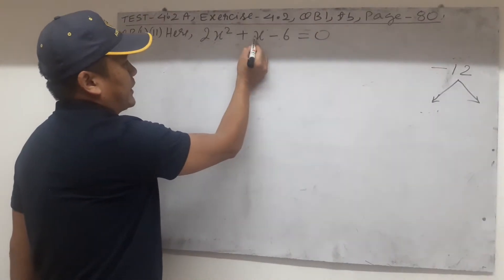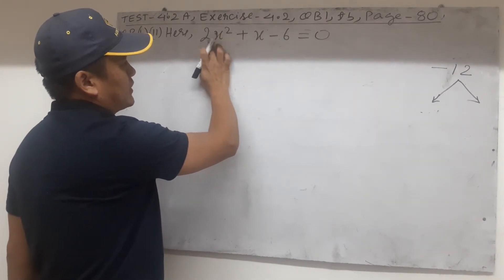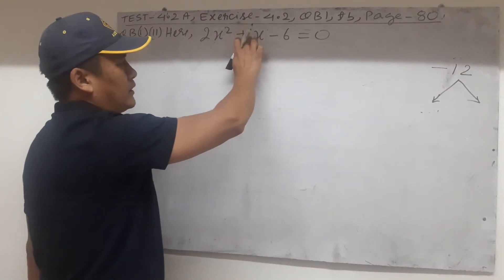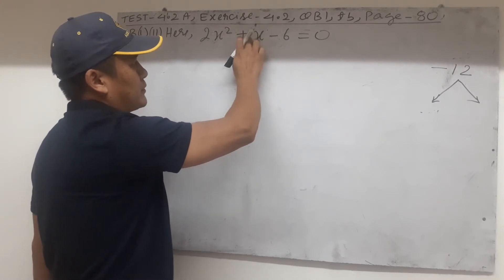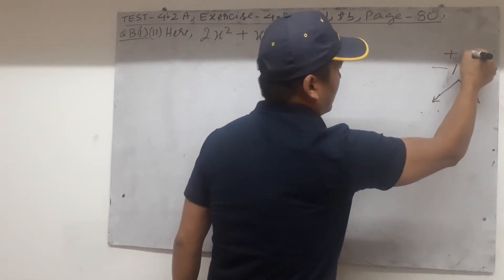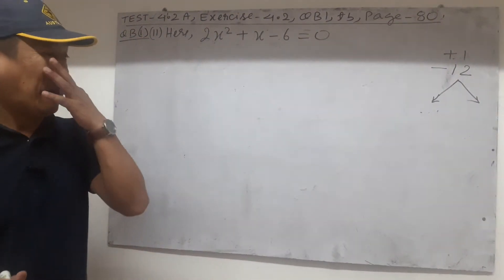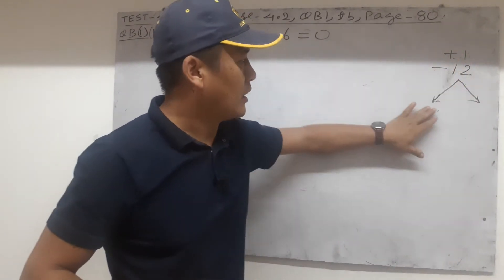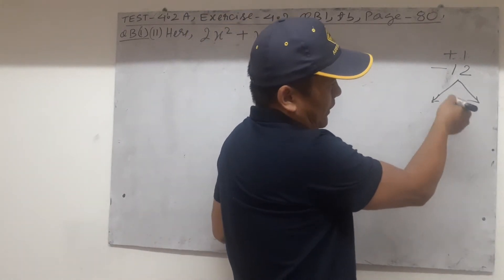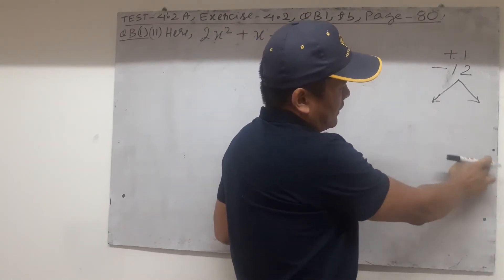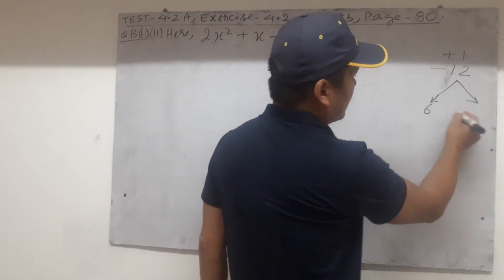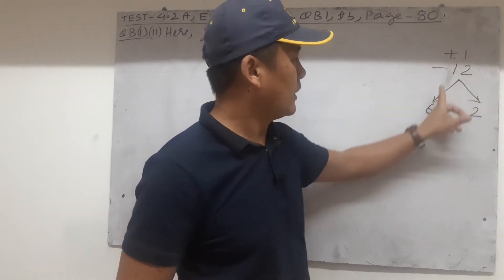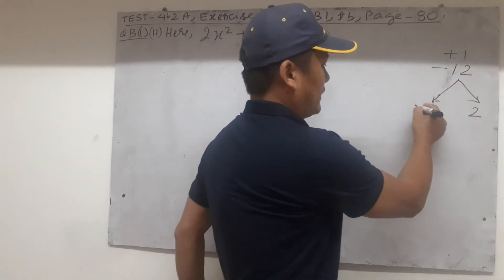Now find a product of 12 that will match up with addition or subtraction. Doing trial and error: 6 and 2 — 6 plus 2 is 8, doesn't match 1; 6 minus 2 is 4, so this is definitely not going to work. Then we go to the next factor pair, again by trial and error: 4 and 3 are also factors of 12. 4 minus 3 is 1, which seems to be matching. The middle term is plus, so we put the bigger one as plus.